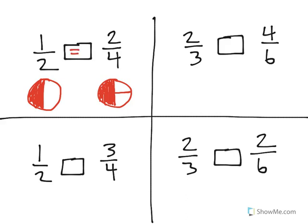And the way we know that is if you multiply the top by 2 and the bottom by 2, 1 times 2 is equal to 2, and 2 times 2 is equal to 4.